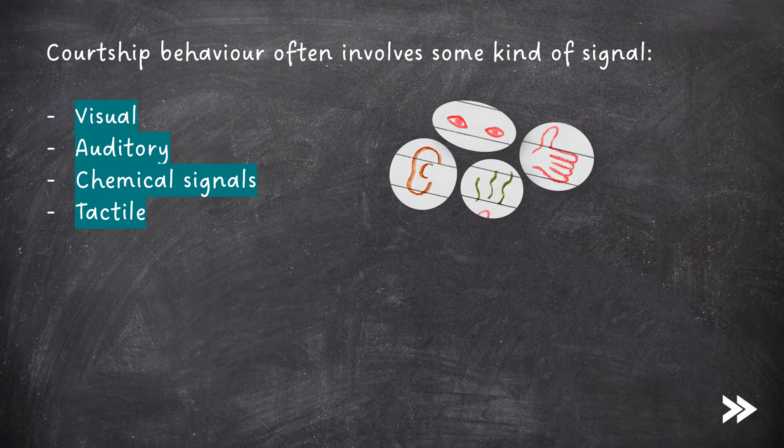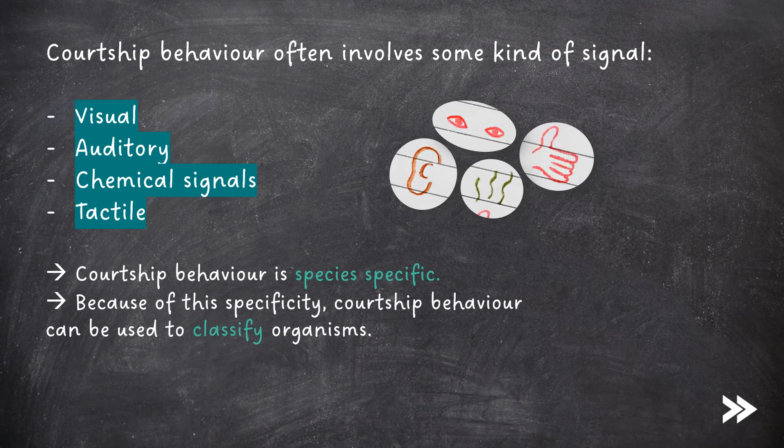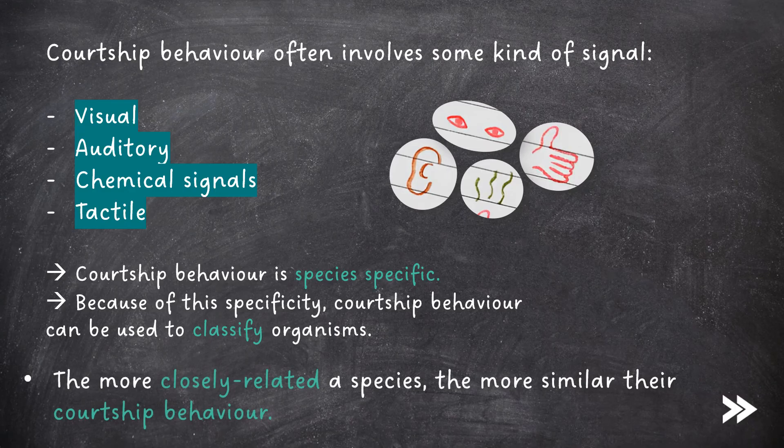Courtship behaviour is species-specific. Because of this specificity, courtship behaviour can be used to classify organisms. The more closely related a species, the more similar their courtship behaviour.